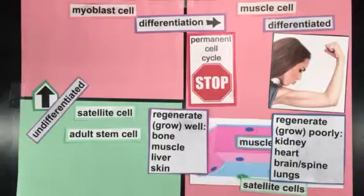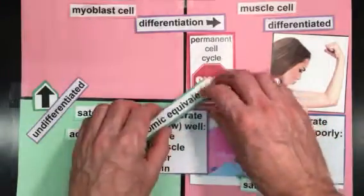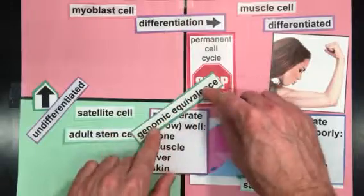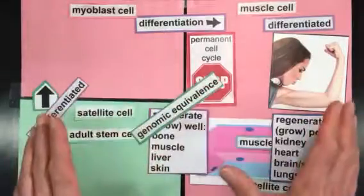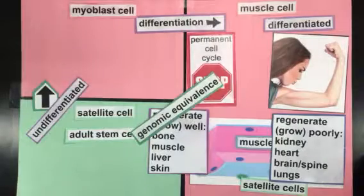One of the important concepts here is that all three of these cell types have genomic equivalence. They have all the DNA needed to make muscles or any other cell in the body.